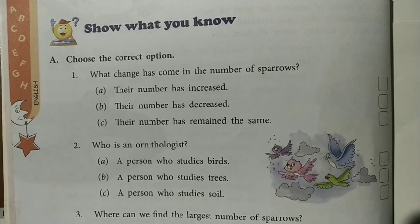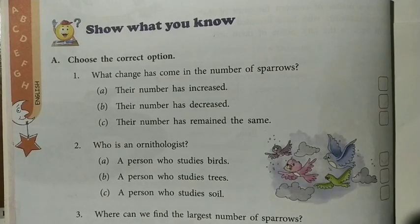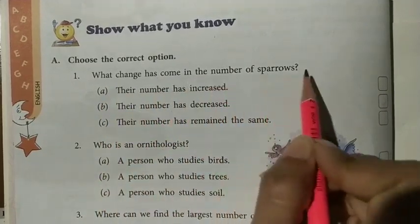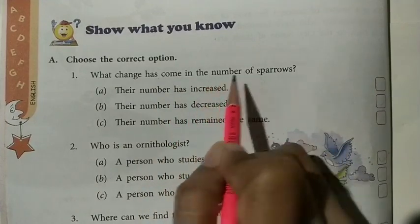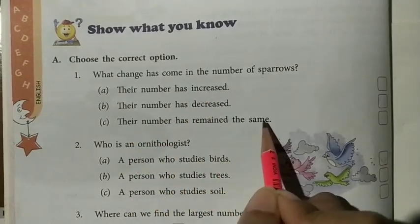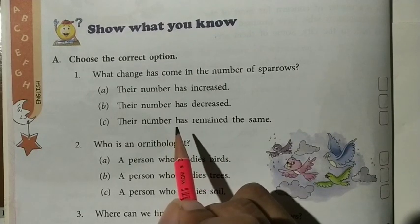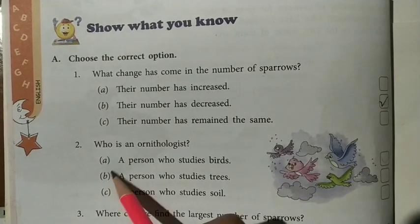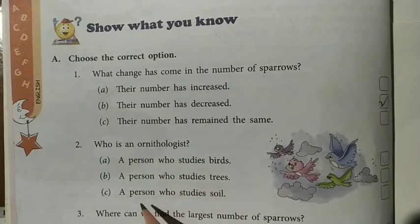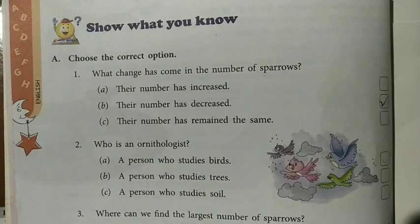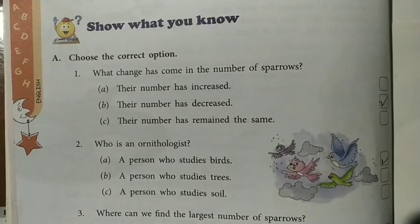Show What You Know, given on page number 6, Part A — choose the correct option. First question: what change has come in the number of sparrows? Options are: their number has increased, their number has decreased, their number has remained the same. The correct option is their number has decreased. Next: who is an ornithologist? A person who studies birds — the answer is A.